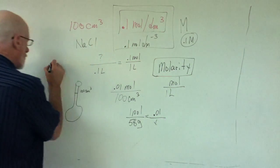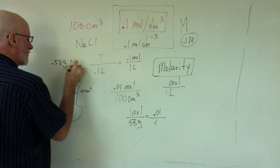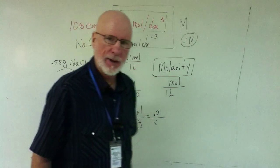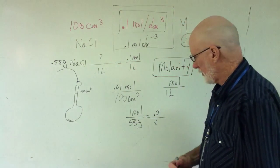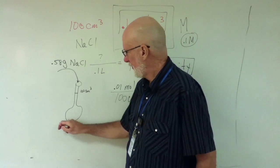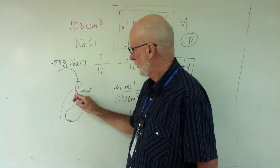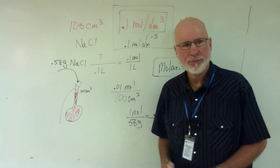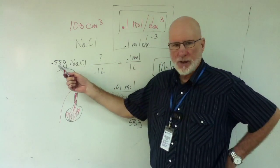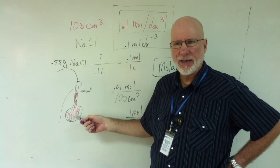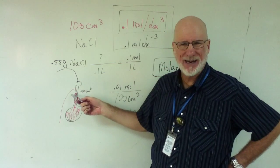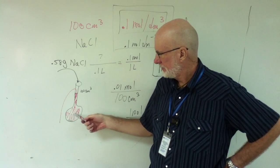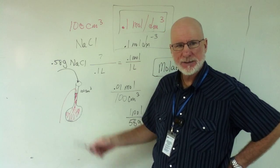So I'm going to take 0.58 grams of sodium chloride and I'm going to put it in here. And then what do I do? And then I fill it with water up to here. So I take 0.58 grams of sodium chloride and I put it into a volumetric flask and I fill the volumetric flask up to the line.